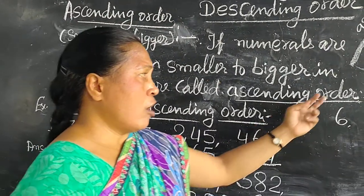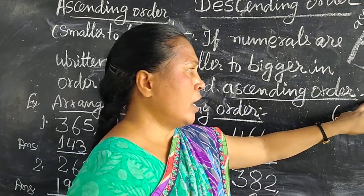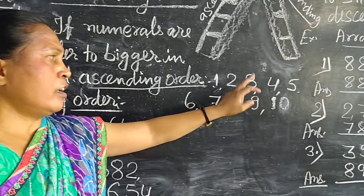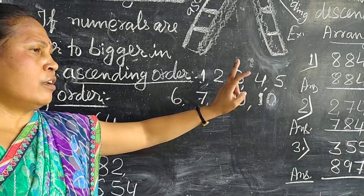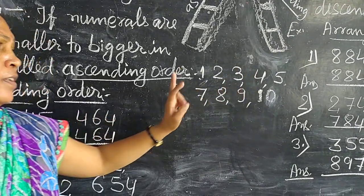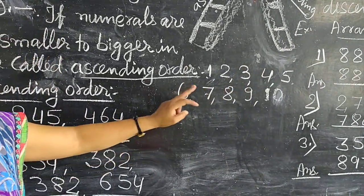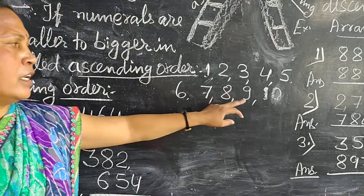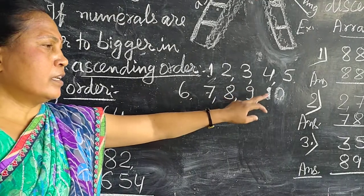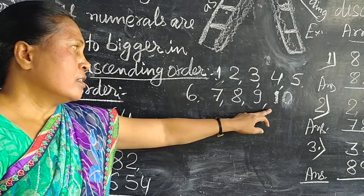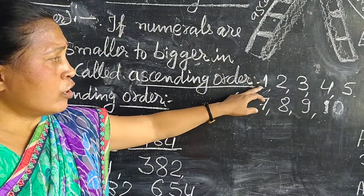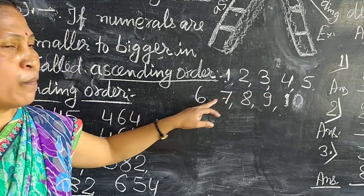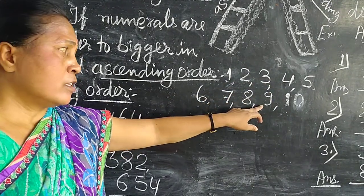So we count 1, 2, 3, 4, 5, 6, 7, 8, 9, 10. So we go from smaller to bigger.